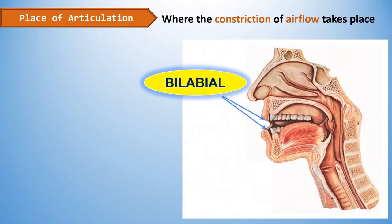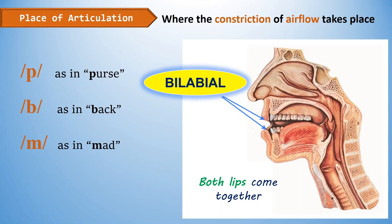The first classification of sound according to its place of articulation is called bilabial. Bilabial sounds are produced when both lips come together. English contains three bilabial consonants.